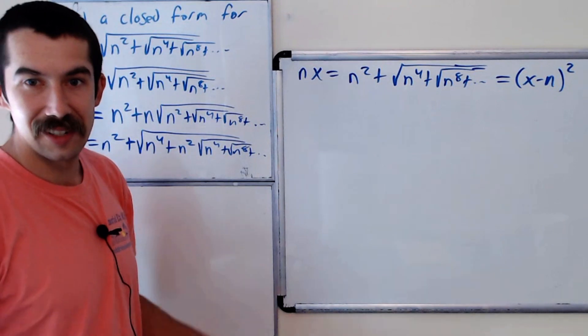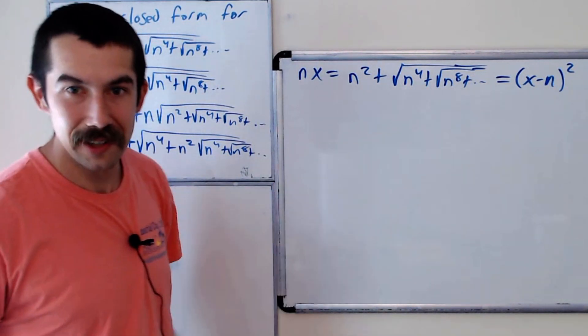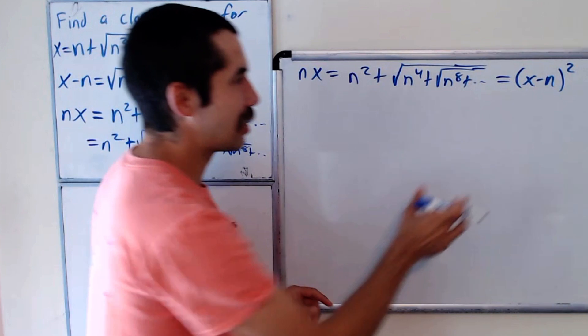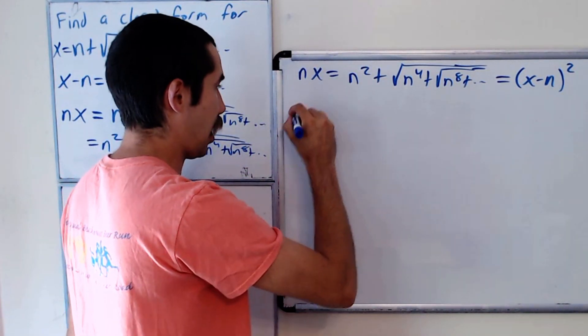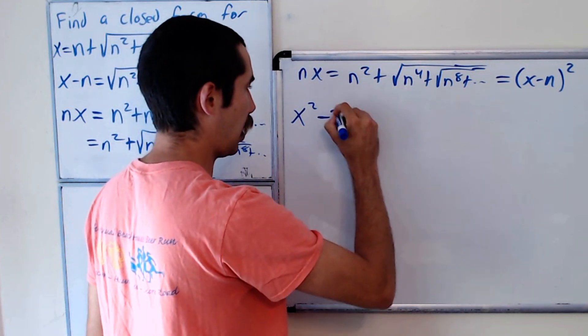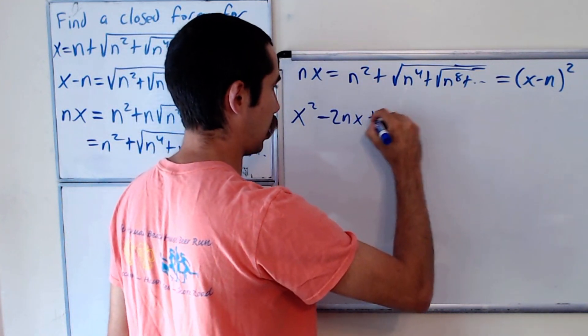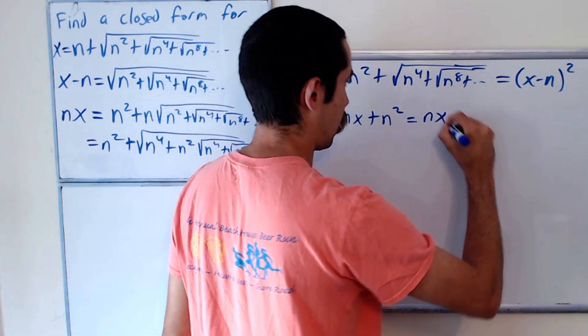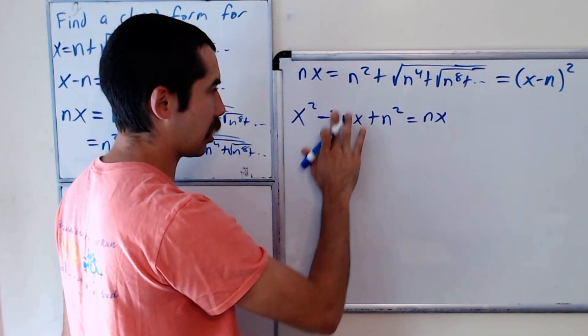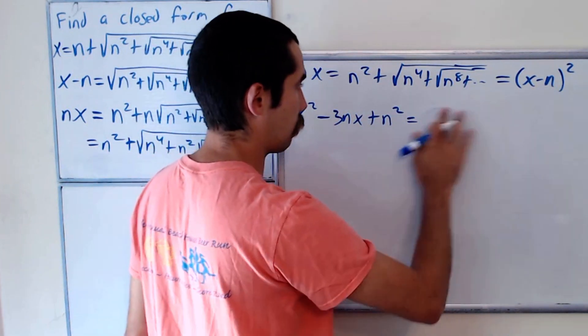And so now we have an easy equation to solve. This is an equation you could have solved in like fifth grade. So let's distribute this out. So that's x squared minus 2nx plus n squared is equal to nx. And we'll bring all the terms to the same side. So we'll call this zero.